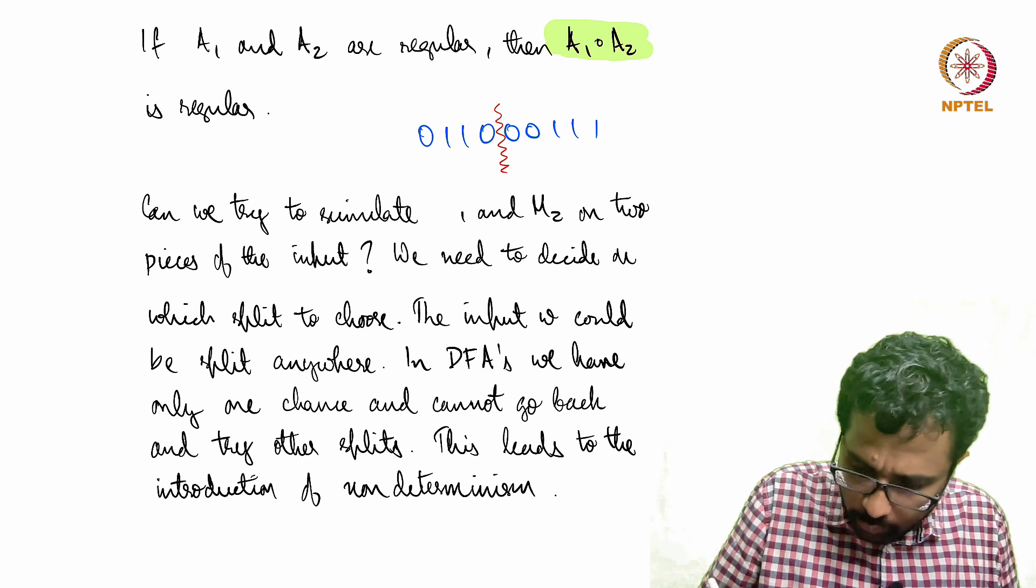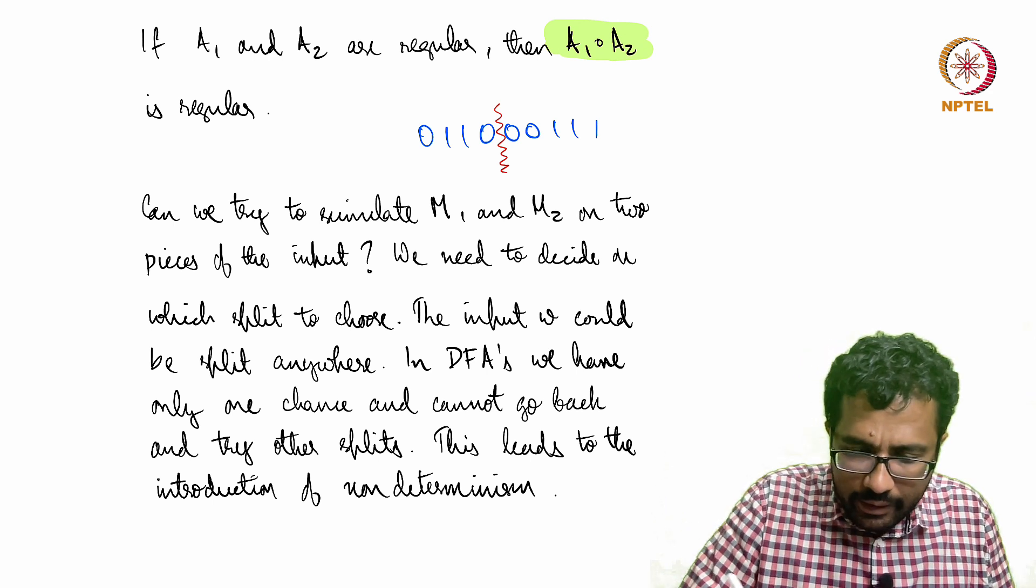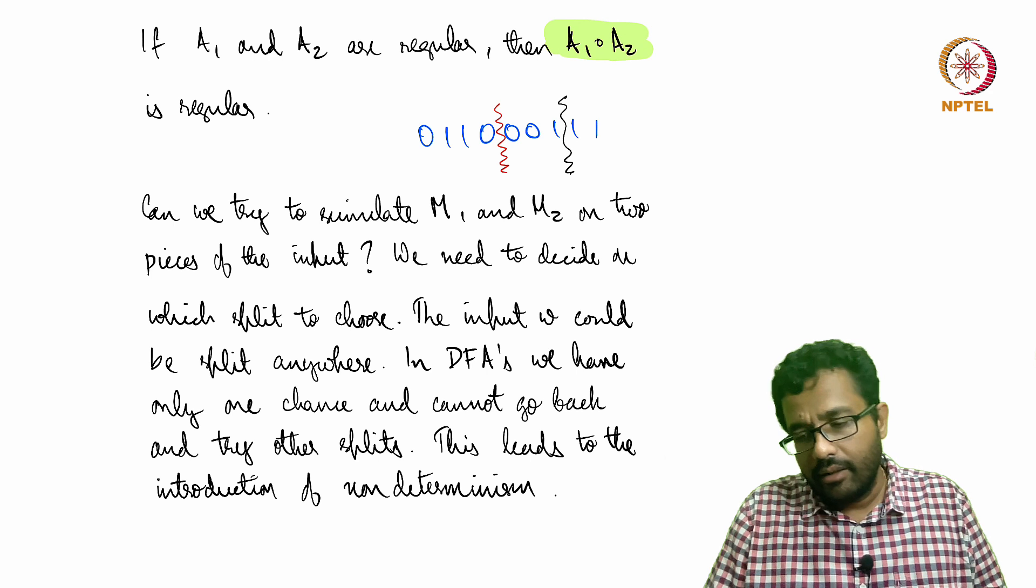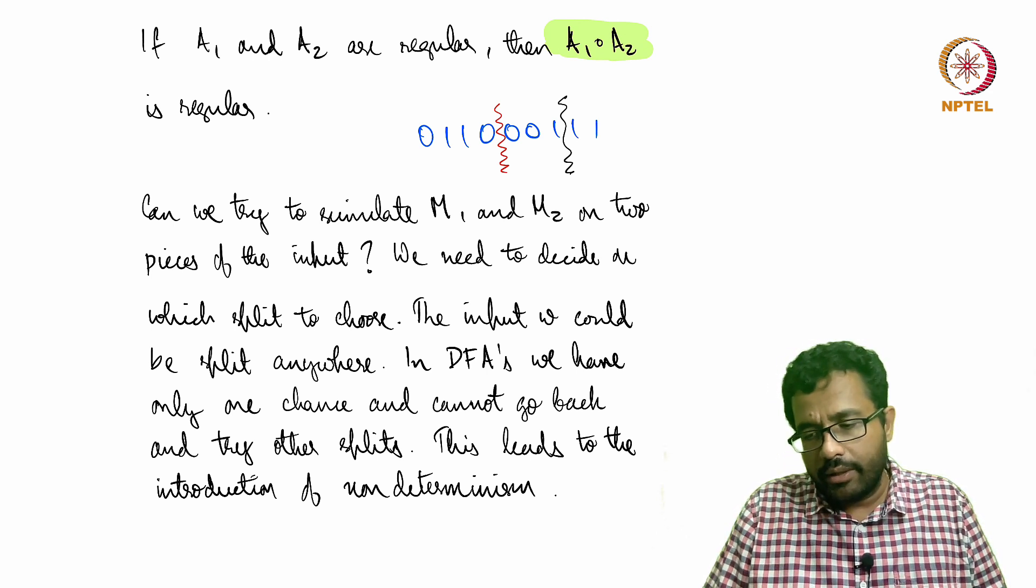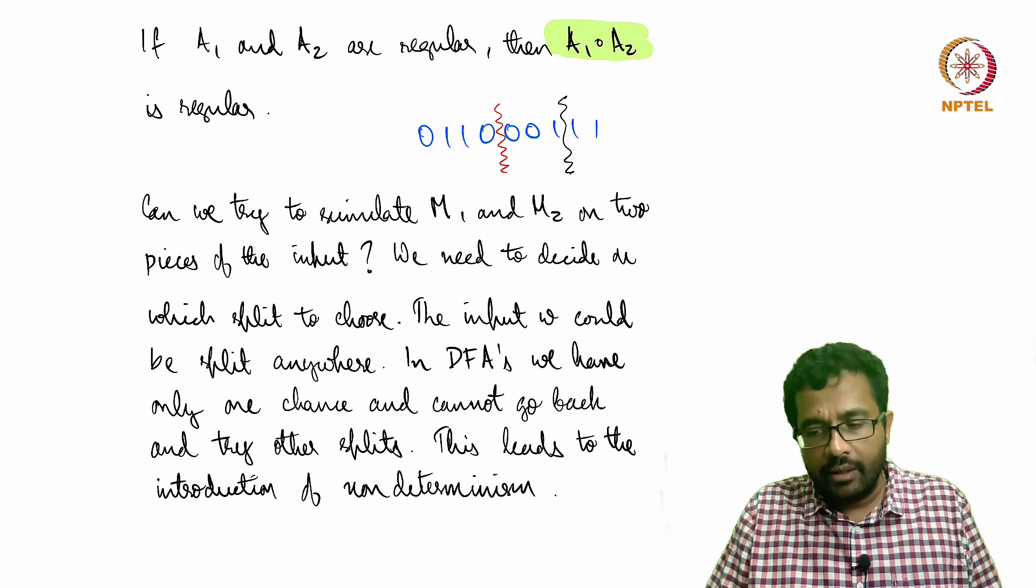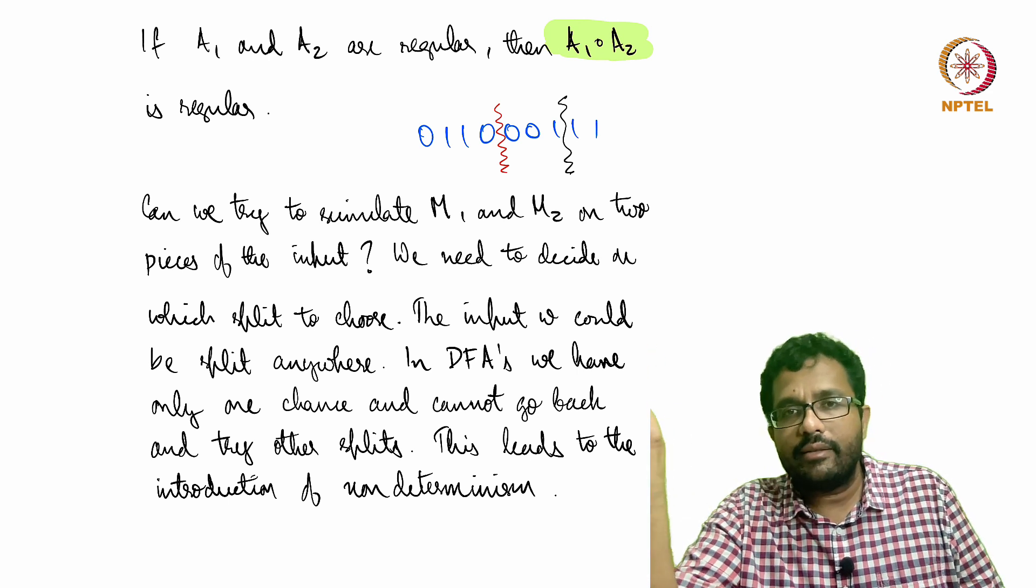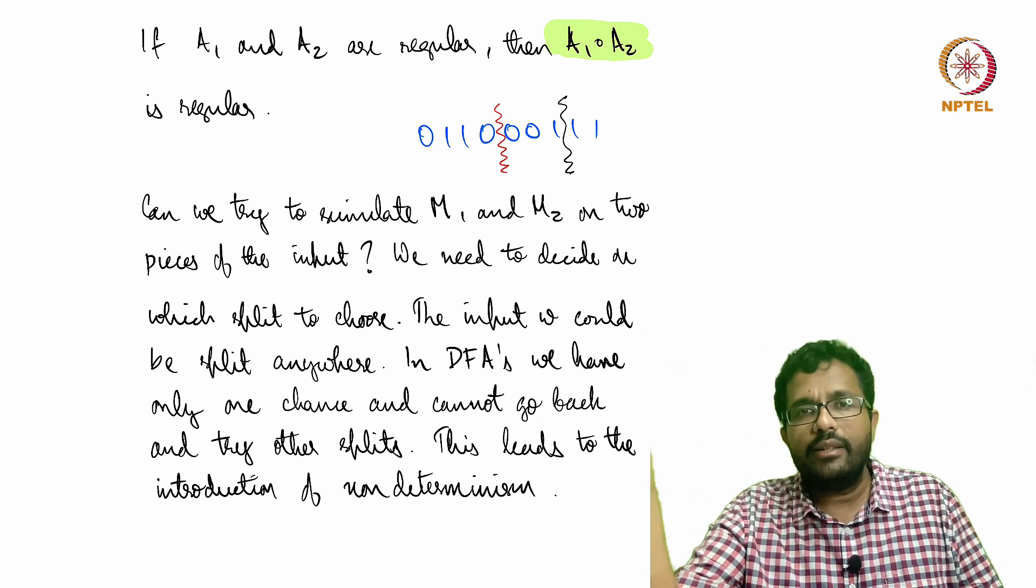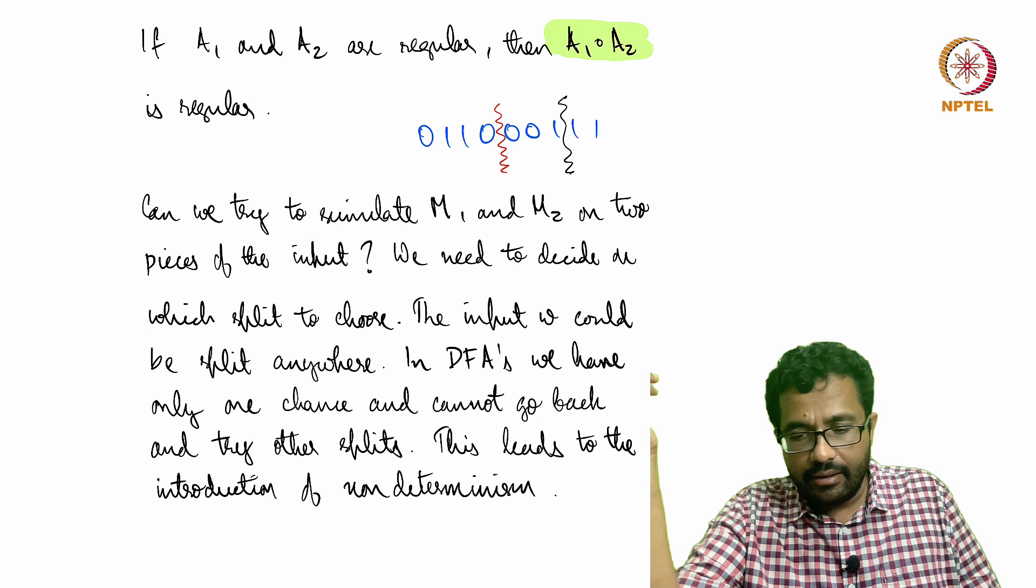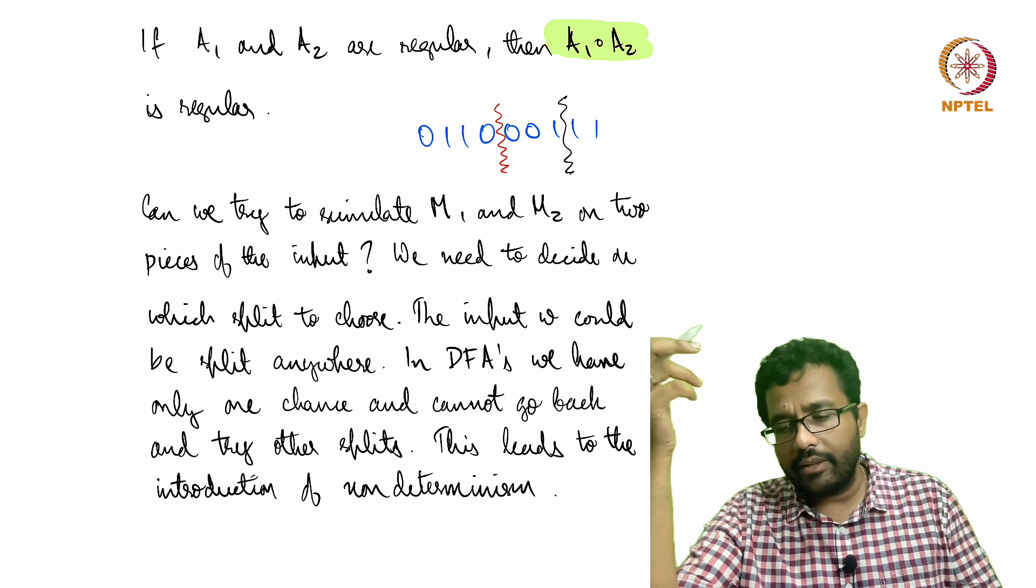But what if we tried something else? What if we tried breaking the string like this—instead of the first 4 and the last 5, we try to feed the first 7, 011001. We check whether it is accepted by M1 and then we check whether 11 is accepted by M2. Perhaps these are not accepted by the respective, or at least one of the respective DFAs. Then how can we infer?